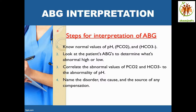Let's move to ABG interpretation. Before that, I recommend keeping some points in mind from the previous slides. Whenever pH changes in the blood, the body will try to neutralize it by the buffer mechanism. And remember: if we need to neutralize an acid, we need to use alkali. The same way, if we need to neutralize alkali, we need to use acid. This is a universal law.